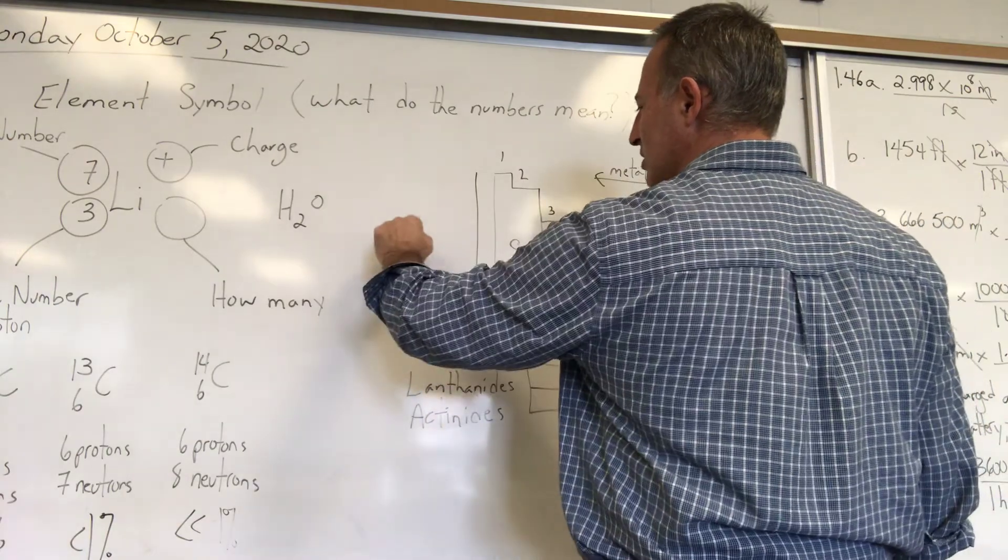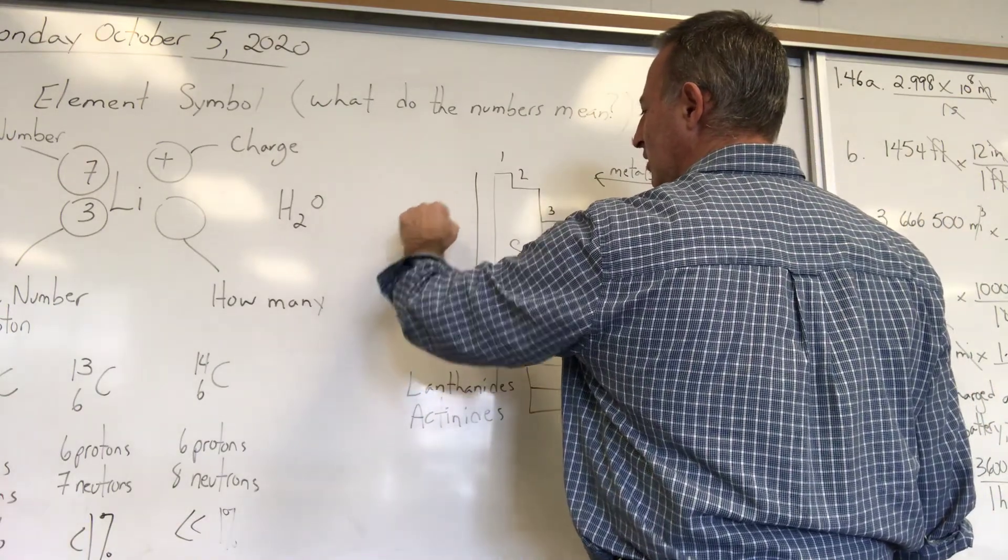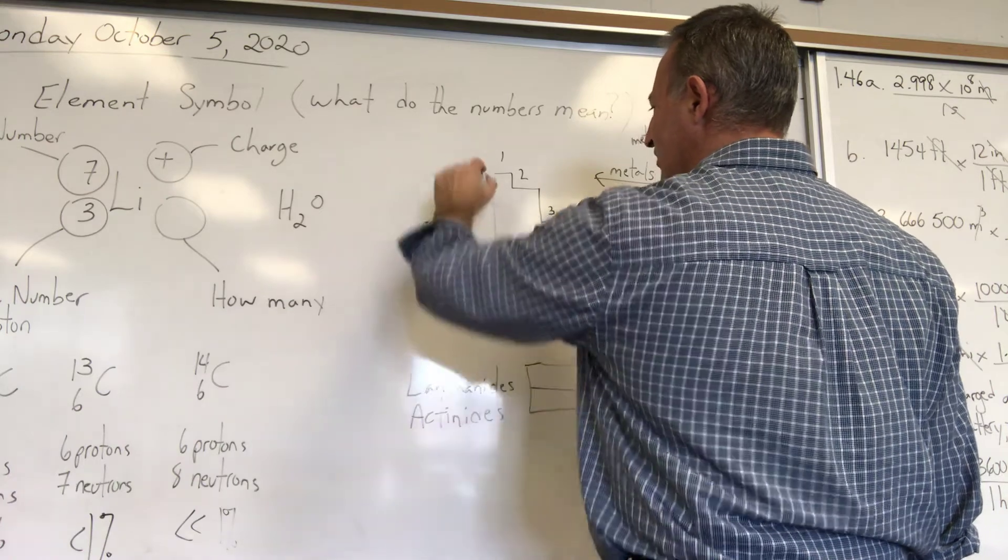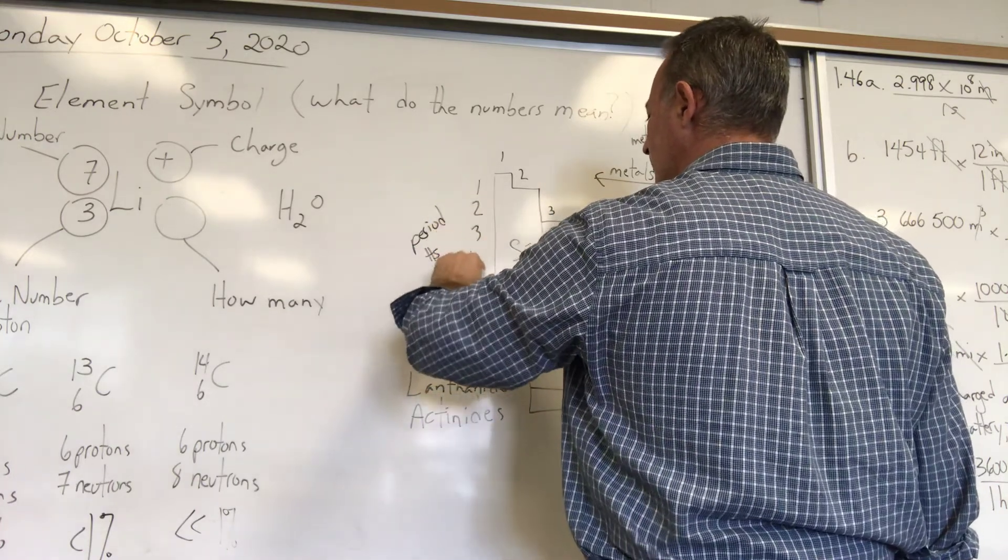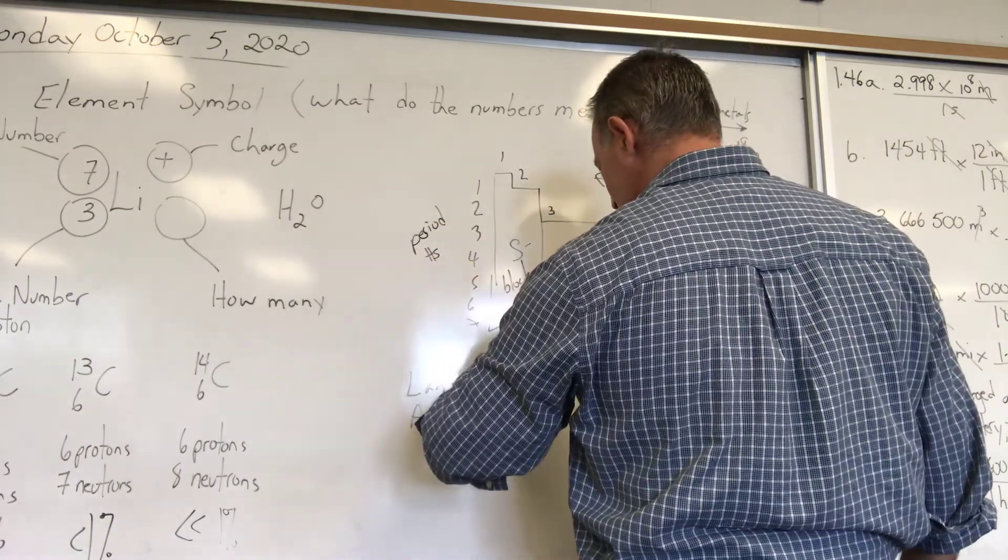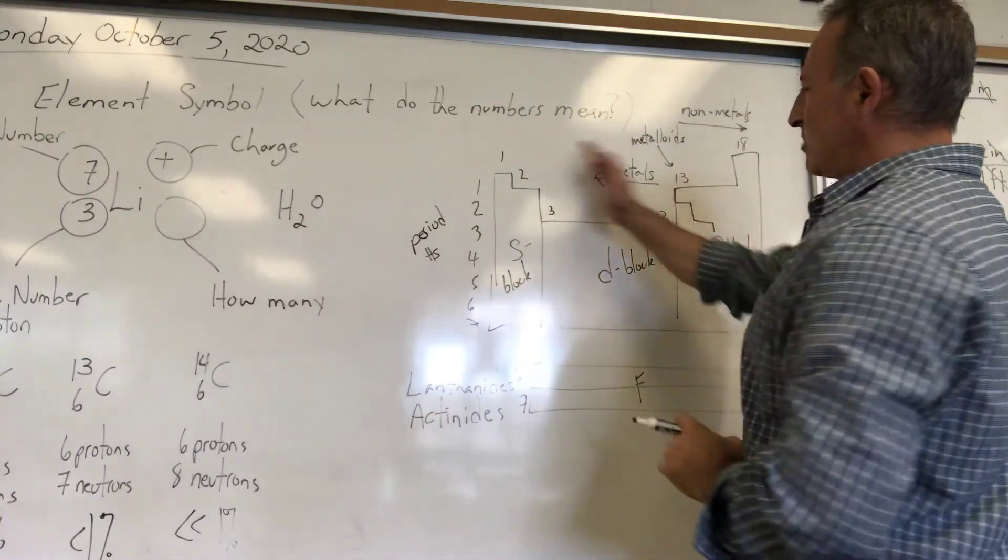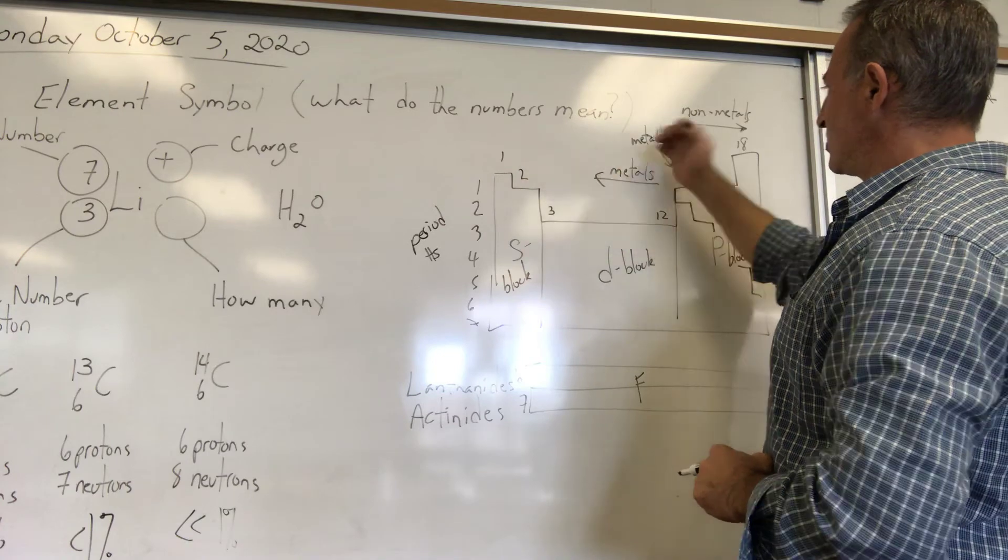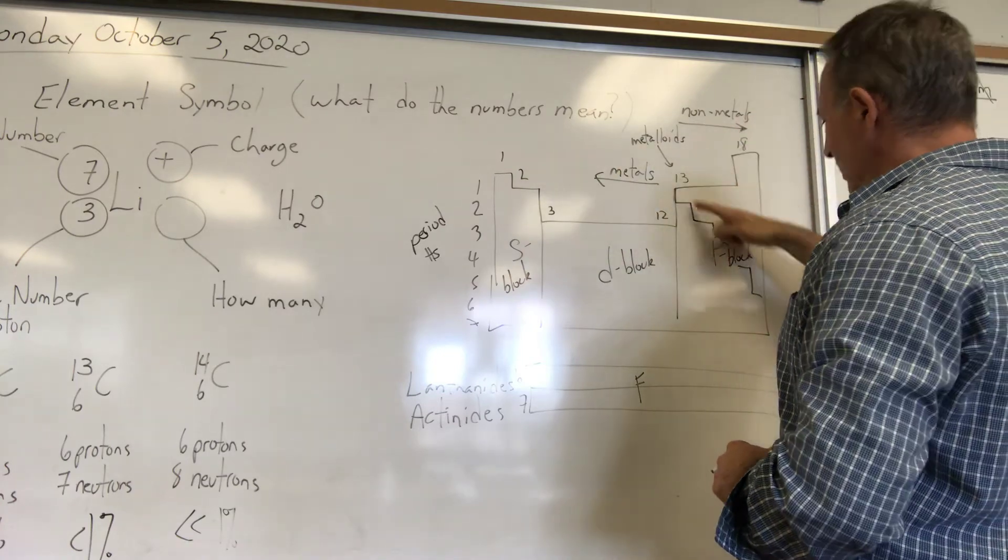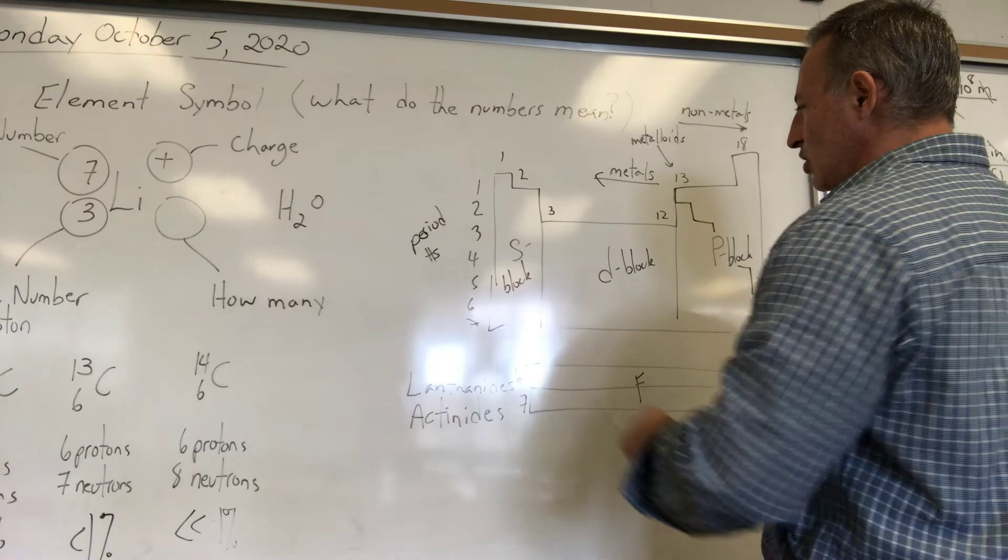You should know all the numbers along here are called the period numbers. They go from one to seven. This is also six, seven for the lanthanides and the actinides. You should know that the left side of the periodic table is composed of metals, the right side is non-metals, and the stair-step line is where the metalloids are located.